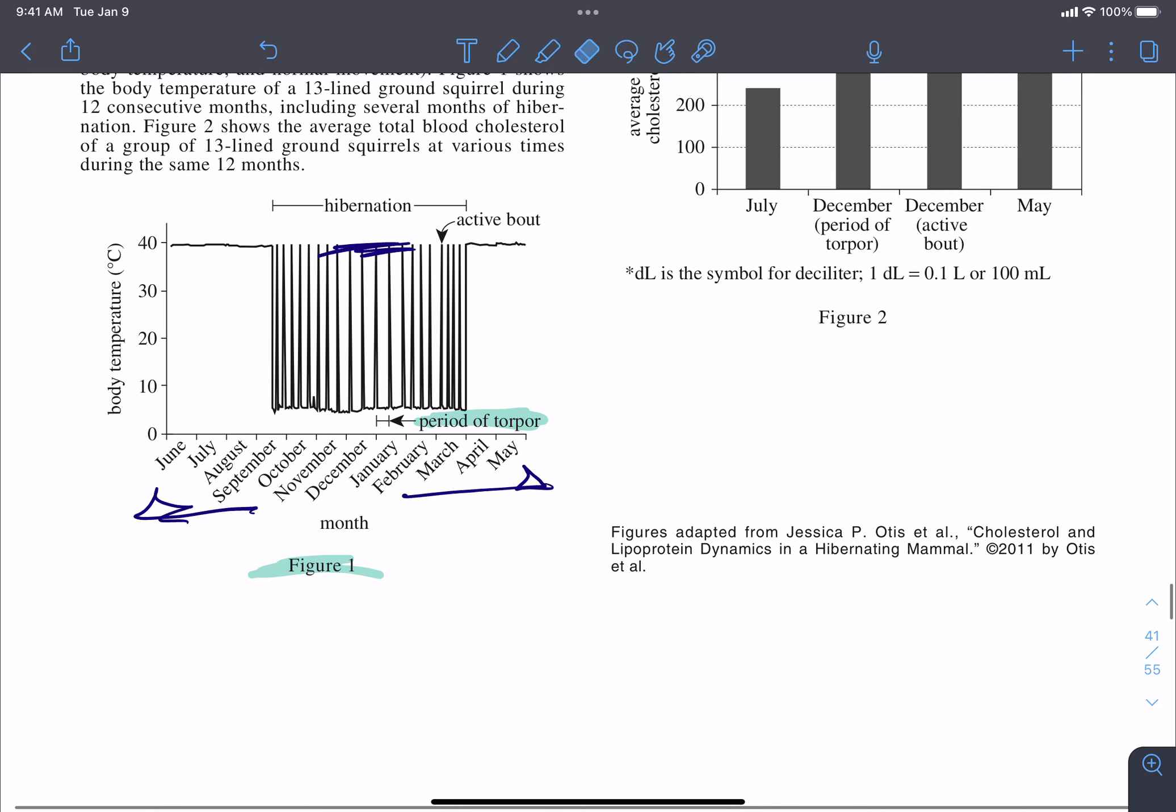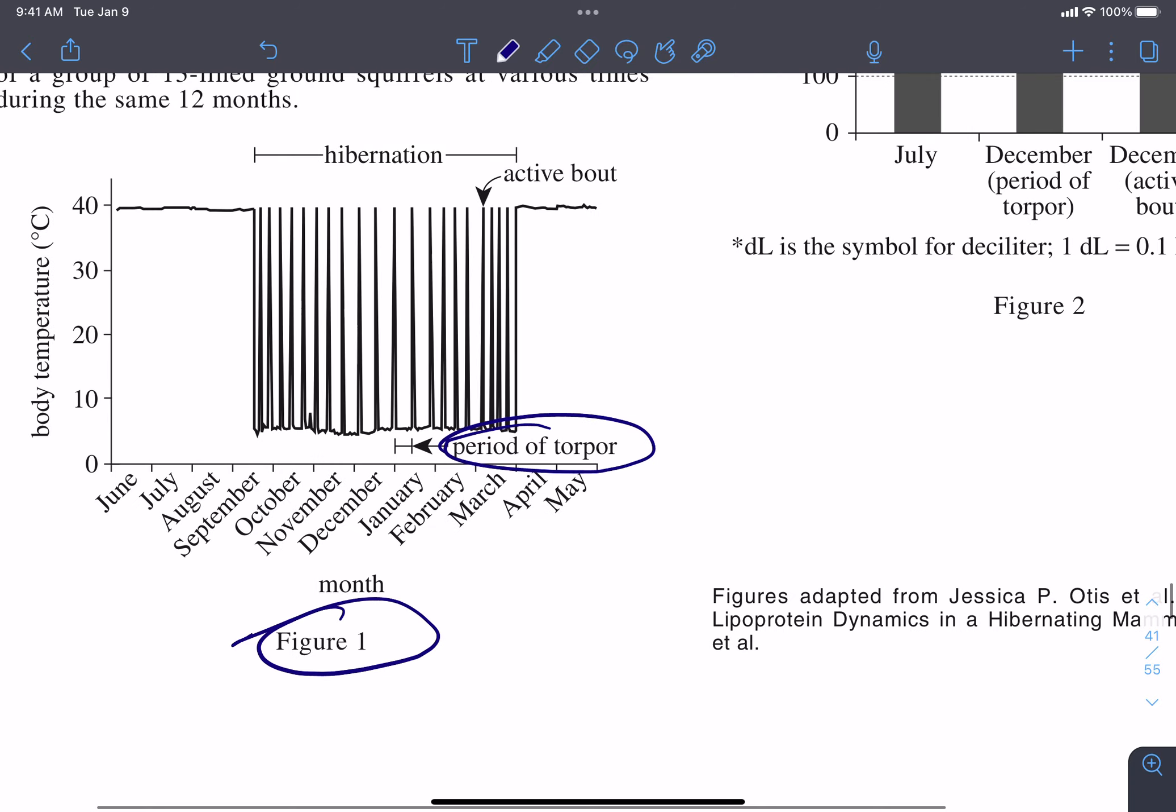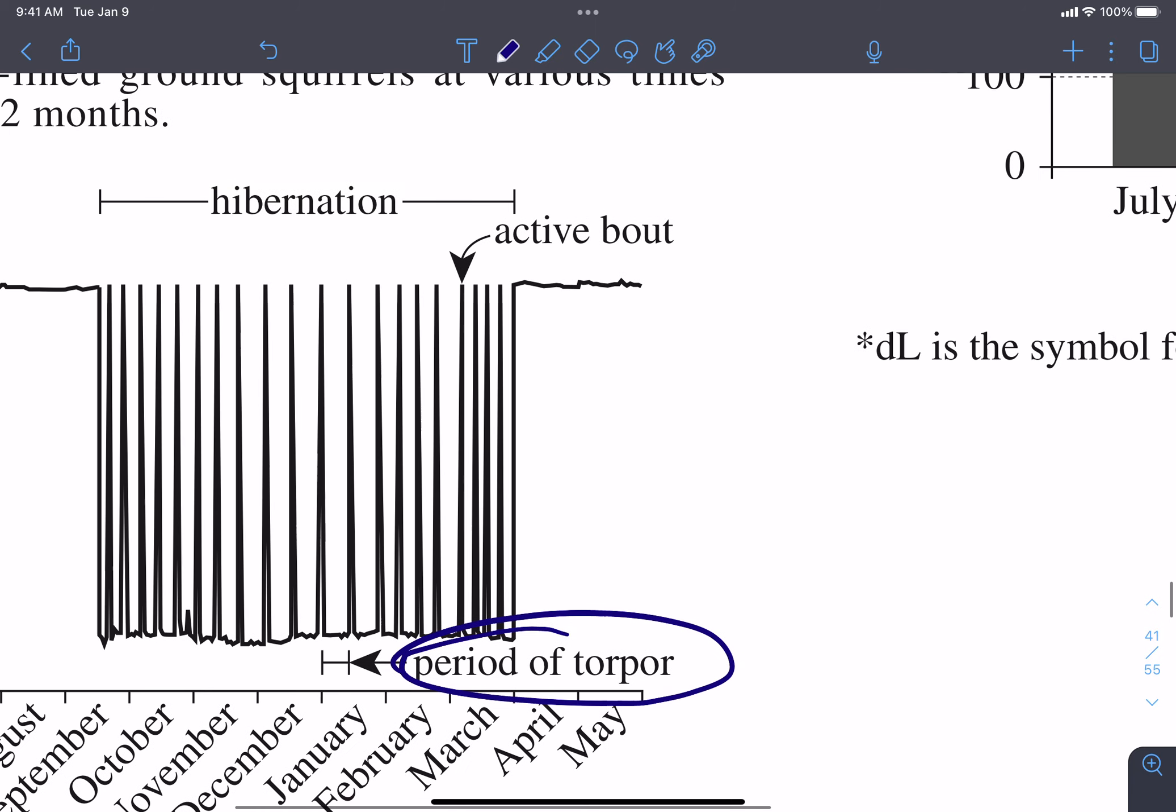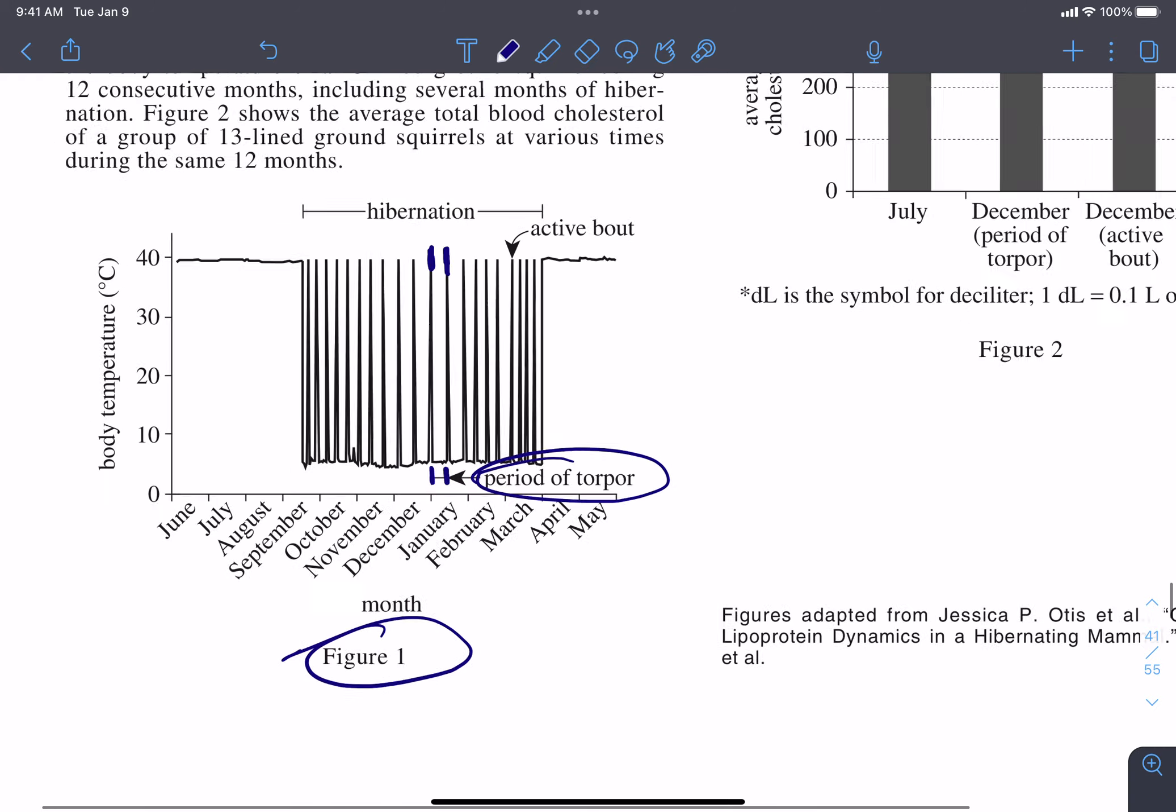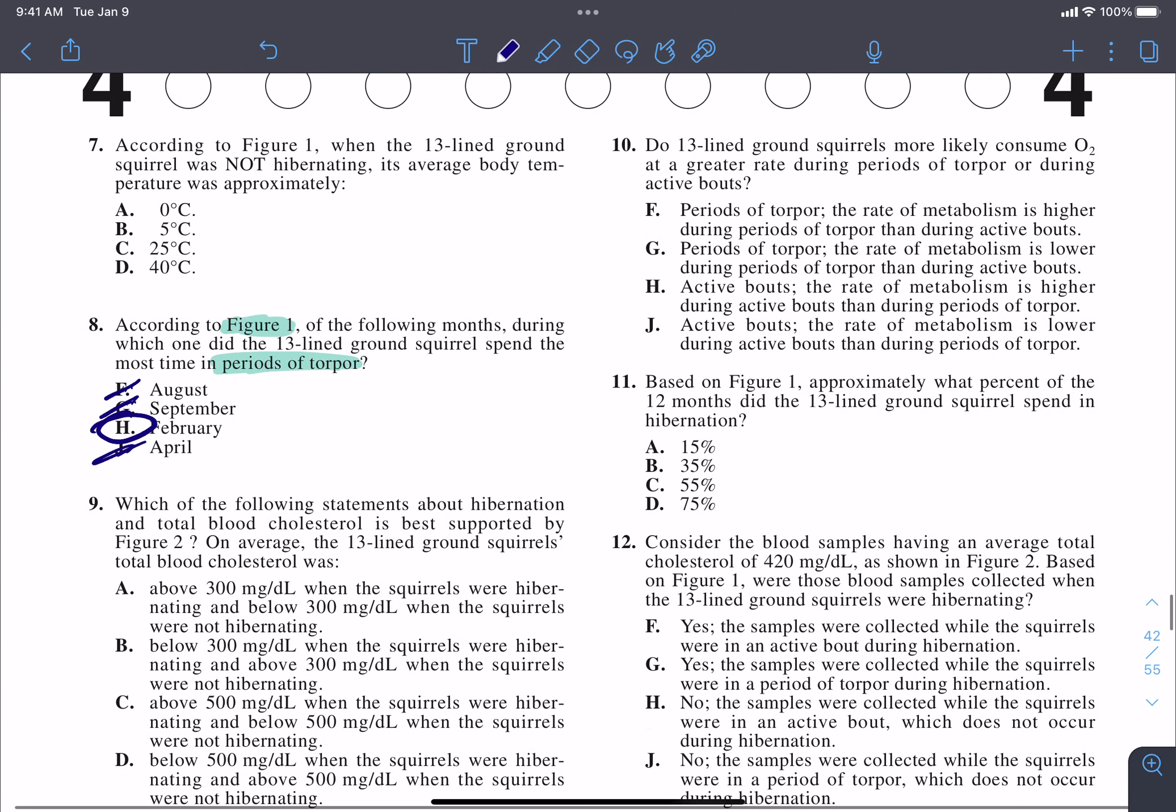So again, what did I do for this question? In my question itself, I circled Figure 1, I circled period of torpor, I found Figure 1, found period of torpor, tried to understand what a period of torpor actually is. It shows me that it's this area between the spikes. And then I just asked myself which areas have the largest width between those spikes. And that's how I got my answer for question number 8, same process every single time.